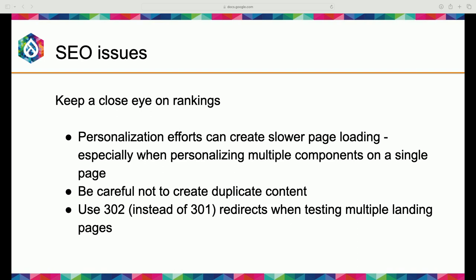SEO issues — not everybody thinks about this one. It's somewhat of an oxymoron because Google loves when you have content that is personalized and exactly what that visitor was looking for. But Google also doesn't like poor performance. Personalization efforts can create slower page loading, especially when personalizing multiple components on a single page. If you have multiple content pieces that can be shown on a page, it limits caching and load speed.